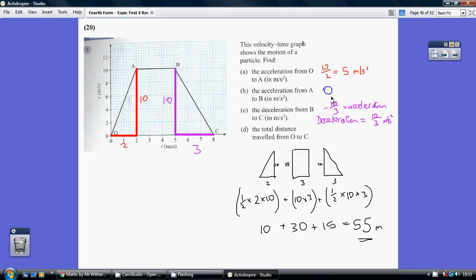Now, deceleration from B to C, well, it's the same theory. The slope is the y-step over the x-step, 10 over 3. So the gradient is actually minus 10 over 3. The acceleration is minus 10 over 3.